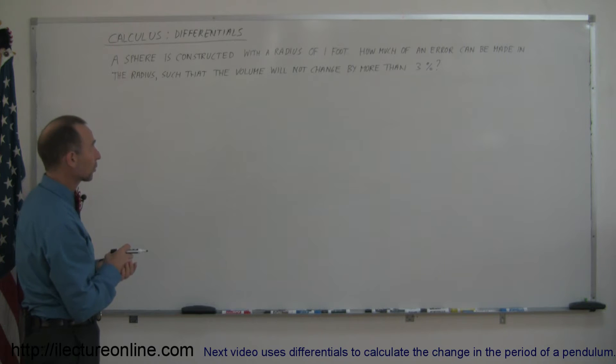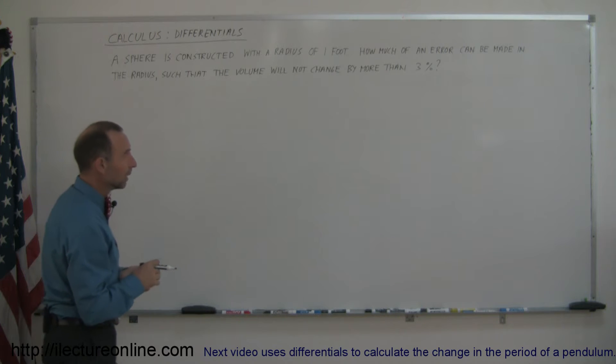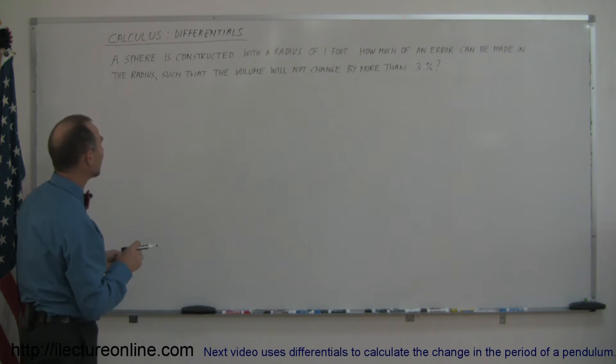It says a sphere is constructed with a radius of one foot. How much of an error can be made in the radius such that the volume will not change by more than 3%?